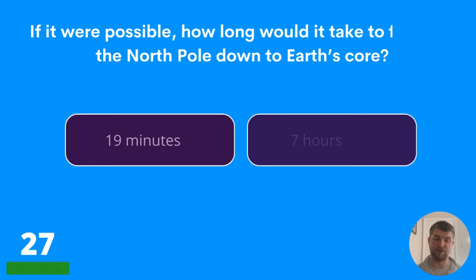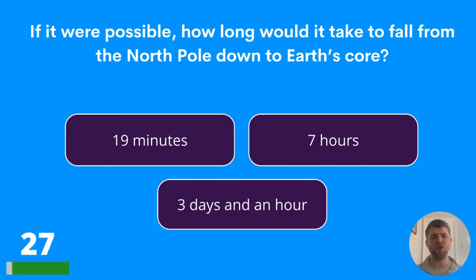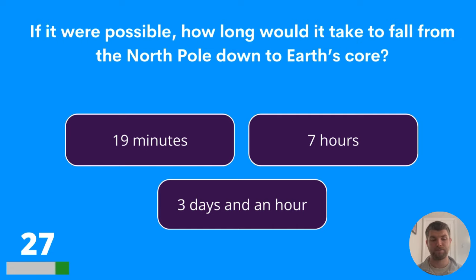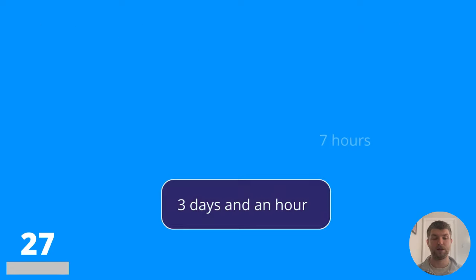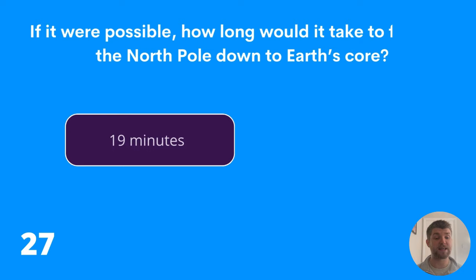Question twenty-seven: if it were possible, how long would it take to fall from the North Pole down to Earth's core? Nineteen minutes, seven hours, or three days and an hour? The answer is nineteen minutes.